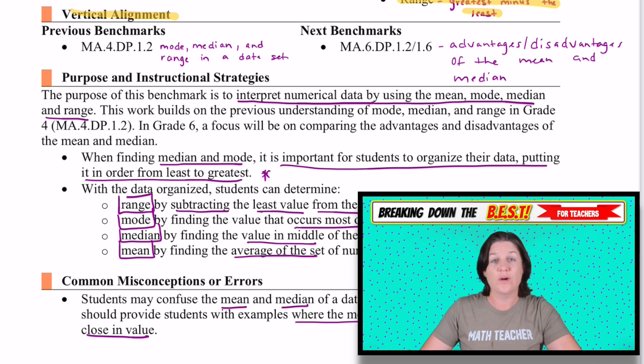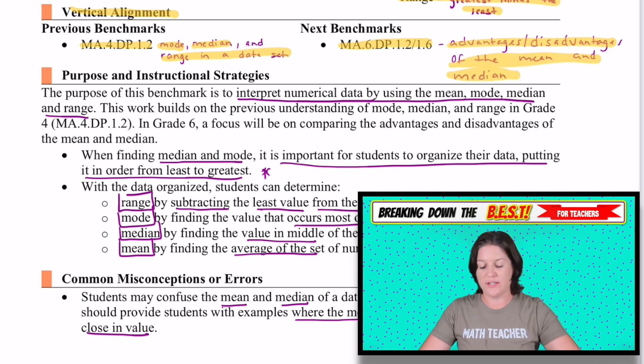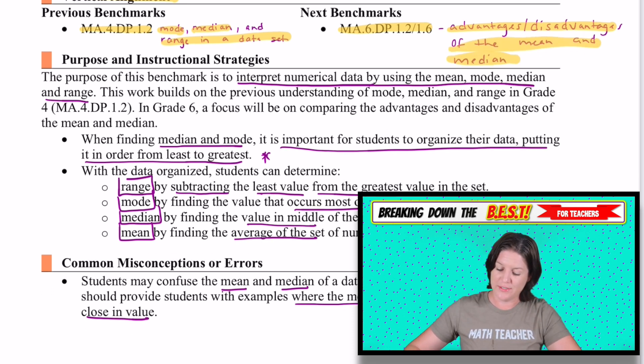Vertical alignment. Where are they coming from? Well, in fourth grade, we've got 4.dp.1.2, which targets the mode, median, and range in a data set. And then in sixth grade, we have 1.2 and 1.6, where we talk about the advantages and disadvantages of the mean and the median. So they definitely need some practice with these.